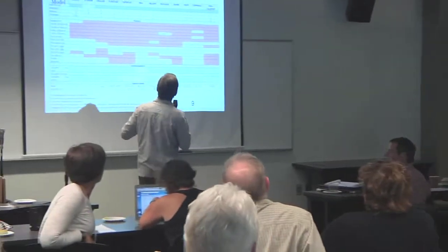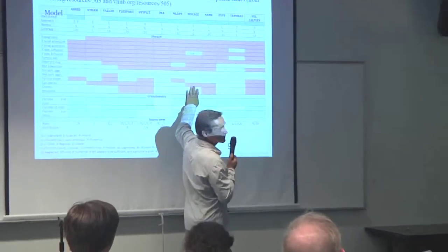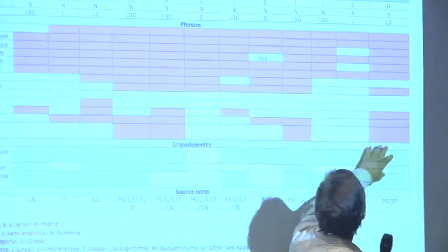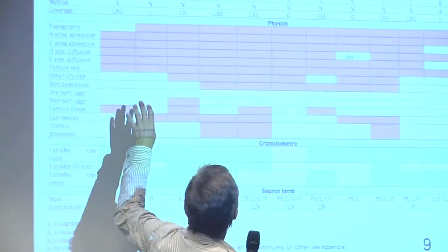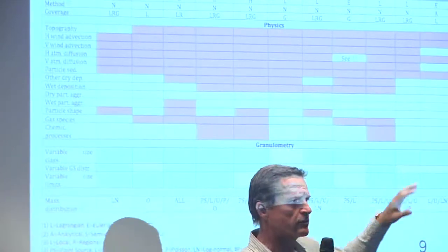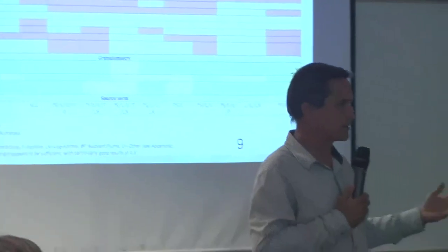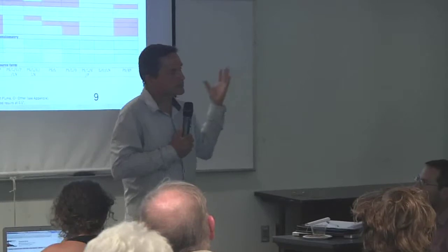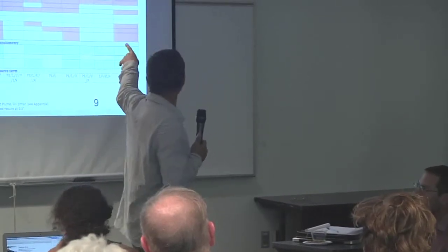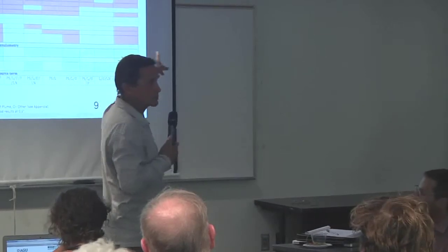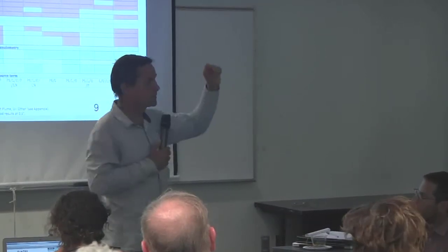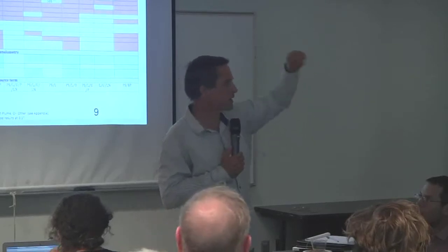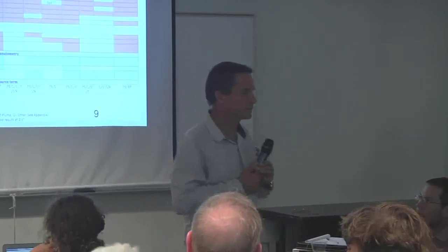This is the UK Met Office model, this is the French Meteorological Service model, Canada, Italy, Norway, Japan — any of the well-developed countries has a model of their own. They can all run for the scale of your region of interest. Virtually all of them have global coverage, so they can all transport ash to a global scale. Most of them even use a database of all the volcanoes on Earth — you can just put in the volcano and it'll transport ash from that volcano anywhere on Earth.